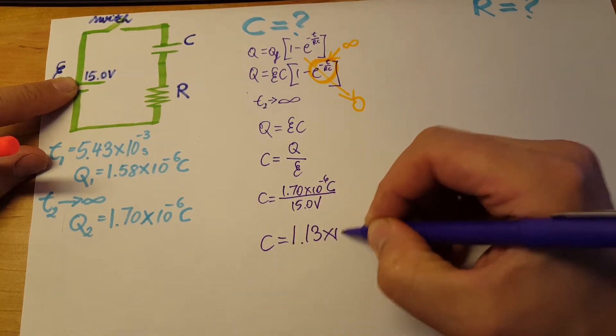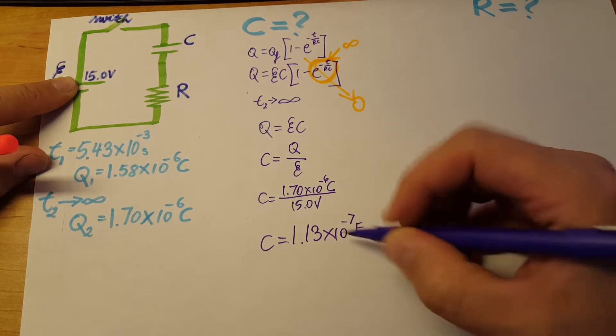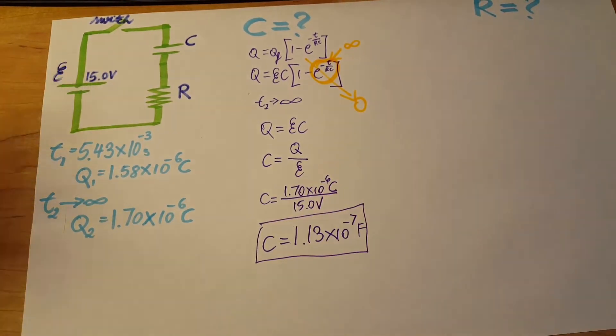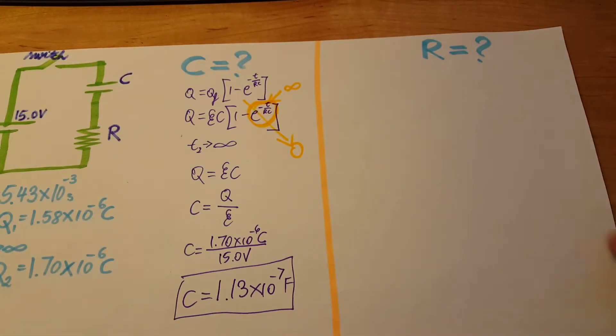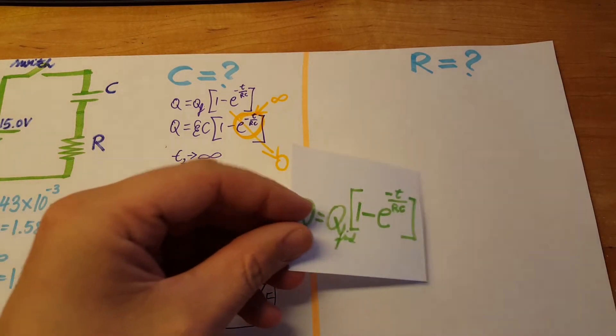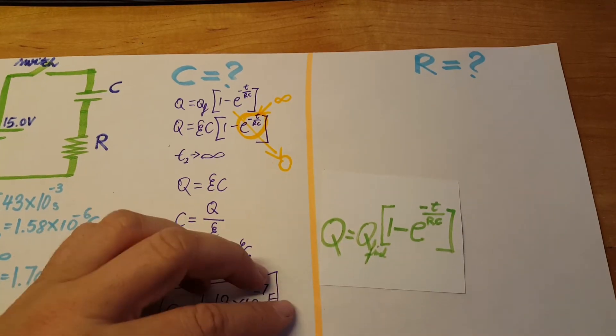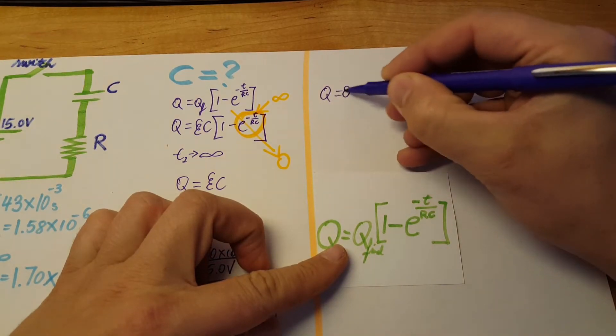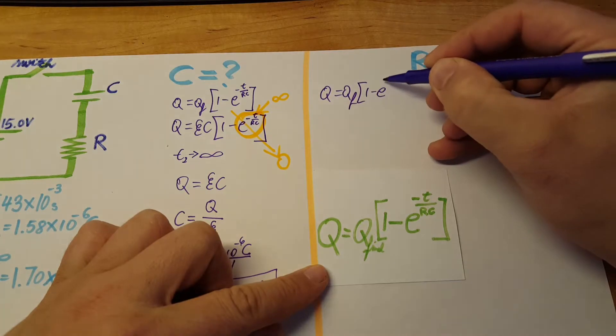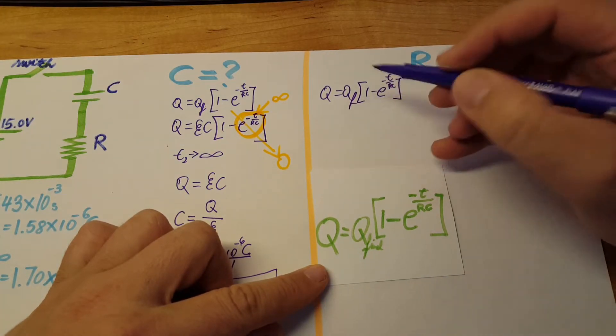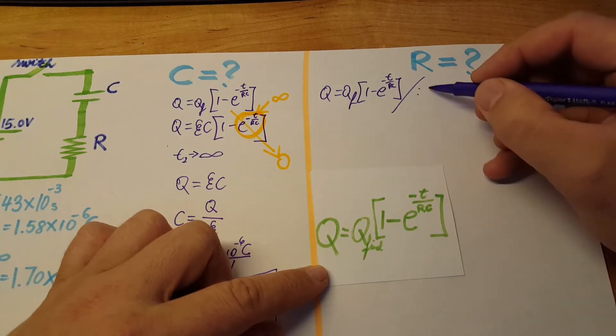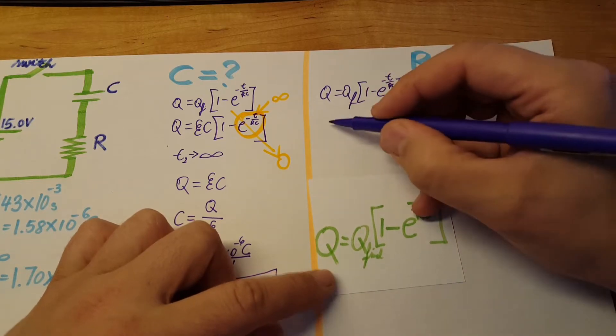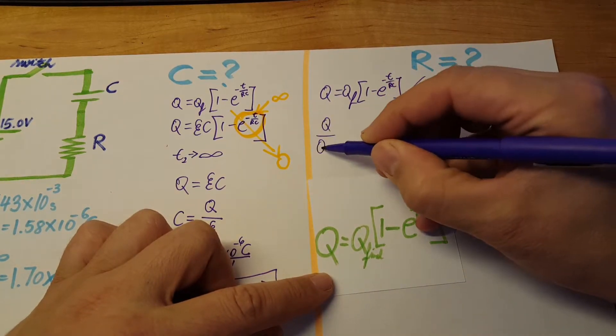There you go, this is our capacitance. Now let's find the resistance. We're gonna use this formula again: Q equals Q final times one minus e to the negative t over RC, and we're gonna divide by Q final.